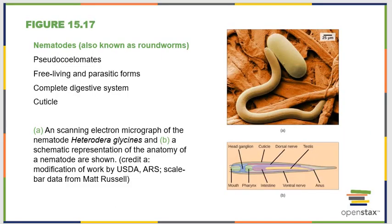Nematodes are roundworms and pseudocoelomates. They're free-living and have parasitic forms. These have a complete digestive system, which makes them different from flatworms. They also have a stronger cuticle on the outside of their body, which means they can withstand tougher external environments due to greater chemical and physical protection.